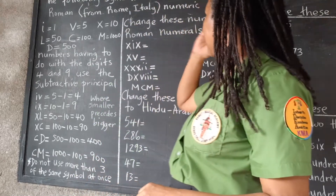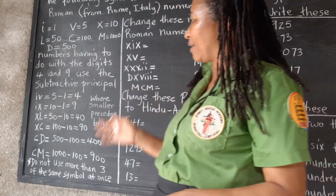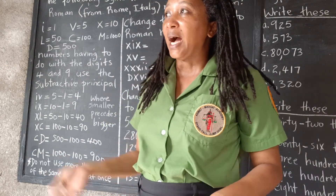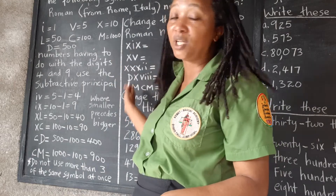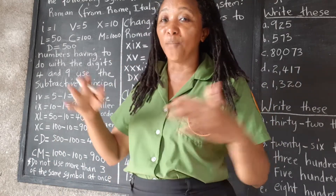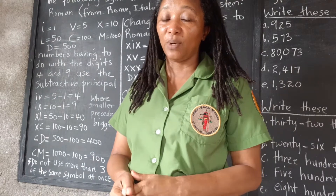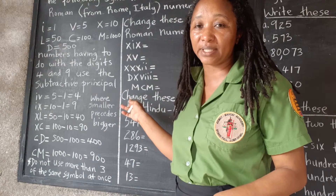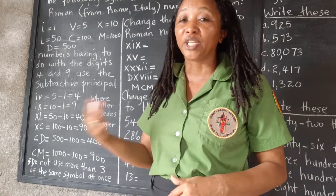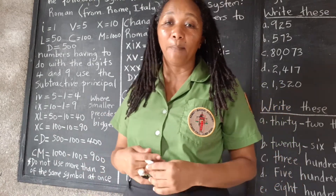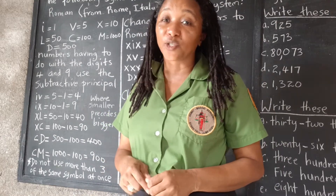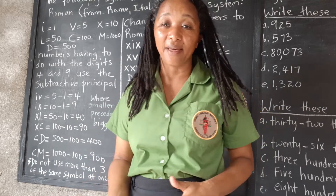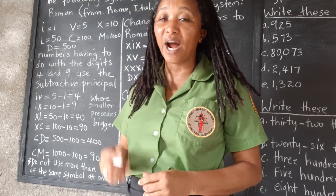Roman numerals are basically the number system that was used in Rome. Rome is the capital of Italy. At the time when these symbols were used, though, Rome was a much bigger place — it was actually an empire. These symbols are no longer used; however, it's good to know them as part of our mathematical tradition, and to know how we can translate them into our Hindu-Arabic system.